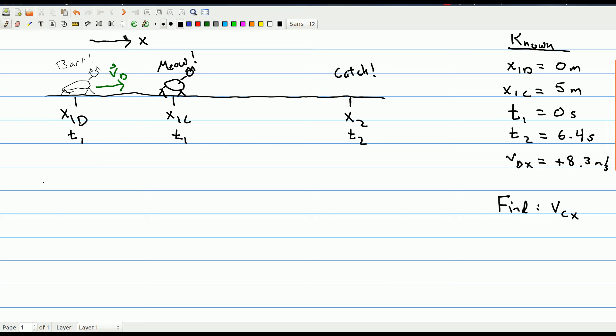t1 is equal to 0, so I can cross that out right away, which is nice. So we get x2 minus x1c divided by t2. Now here I know the starting position of the cat, right? That's my 5 meters. I know t2, that was the 6.4 seconds, but I don't know x2 yet. I don't know the distance they end up at. So I can't just use this to find the answer.